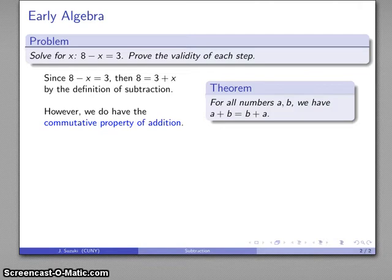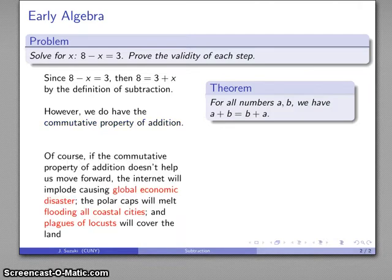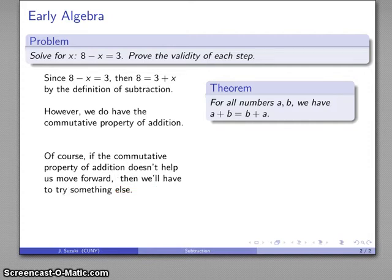Well, we have to be extremely careful here, because if the commutative property of addition doesn't help us move forward, the internet will implode, causing global economic disaster, the polar caps will melt, flooding all coastal cities, and plagues of locusts will cover the lands, and even worse things will happen if we use the wrong theorem. Well, actually, if it doesn't work, we'll try something else. It doesn't hurt to apply a mathematical theorem. The worst that happens is it doesn't work.